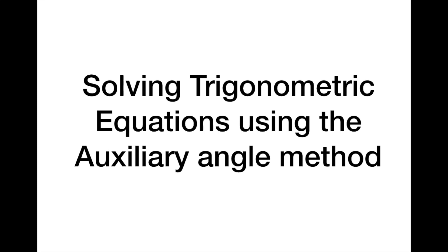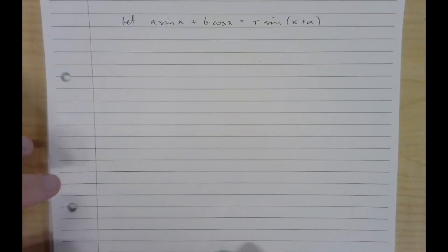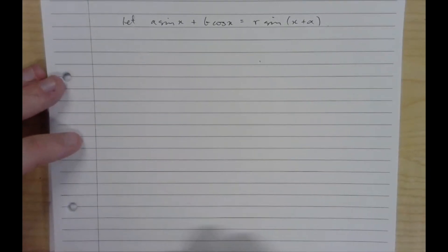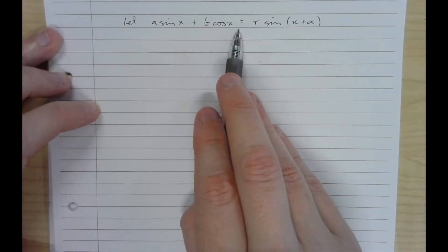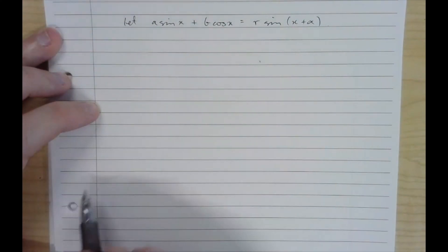Today we're doing solving trigonometric equations using the auxiliary angle method. To prove our auxiliary method we will have this assumption: A sine x plus B cos x equals R sine x plus alpha.